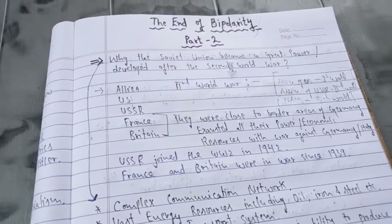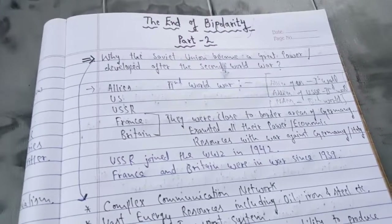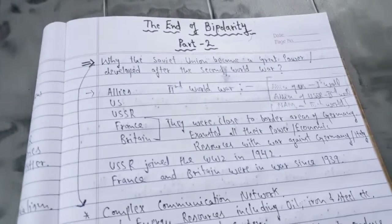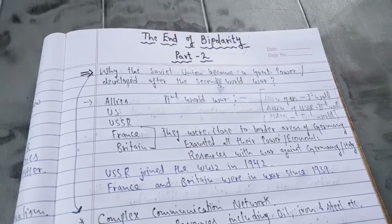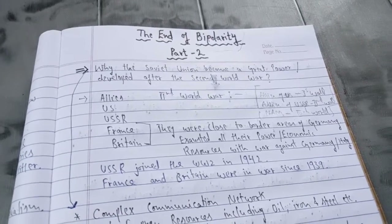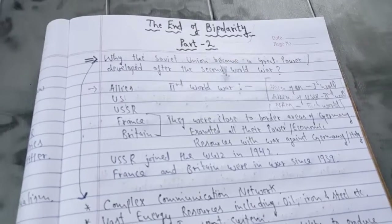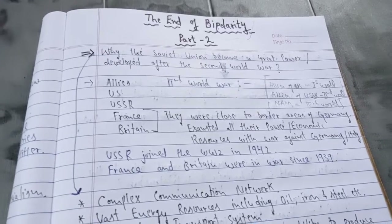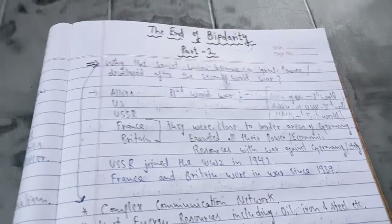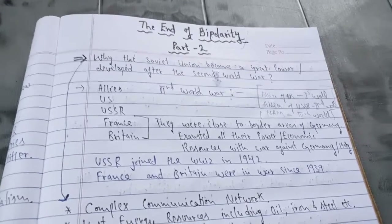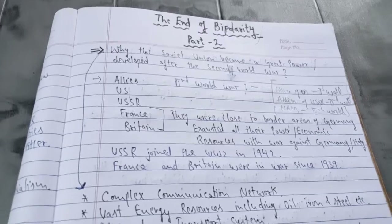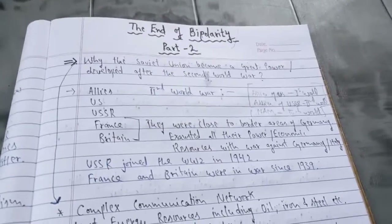I also told you how USSR forces liberated East European countries from fascist forces. When those countries were liberated from the rule of Germany and Italy and merged into Russia, the USSR was formed. In the first part I gave you the introduction of how it was formed and what policies and ideologies it followed.